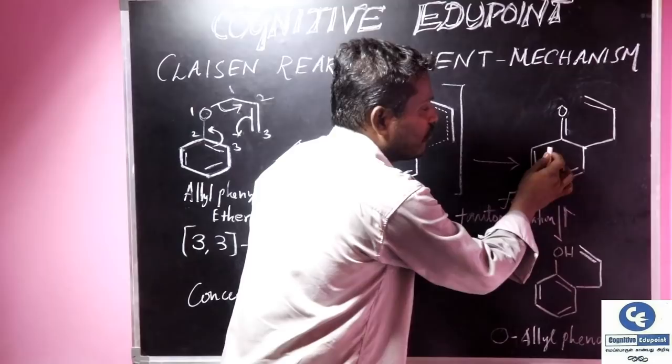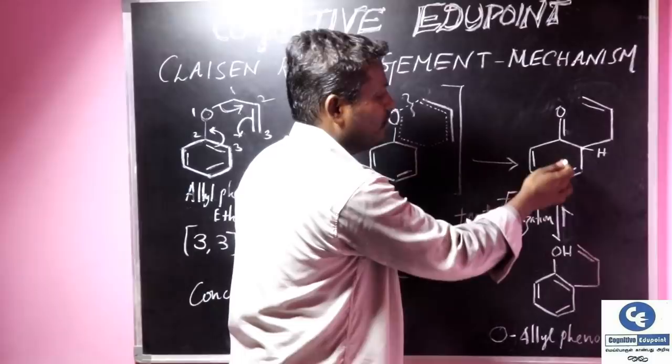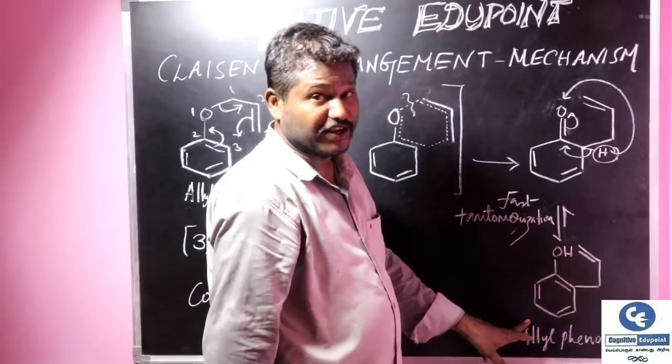And this is a 4-pi system, which is relatively less stable than the aromatic systems. So it can rearrange to form a keto-enol tautomerization. Keto form will tautomerize to enol form. This bond will move here and this will move here. Proton will switch to oxygen. We will get a phenol.